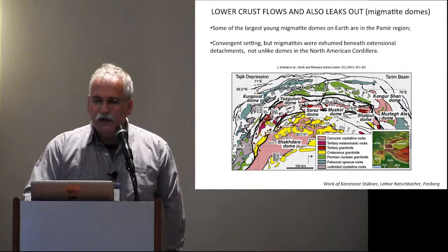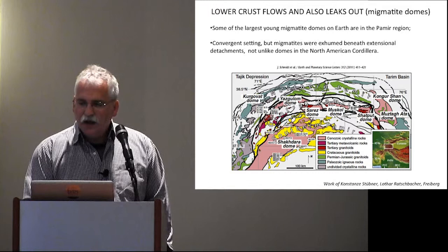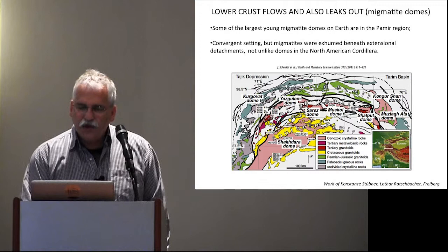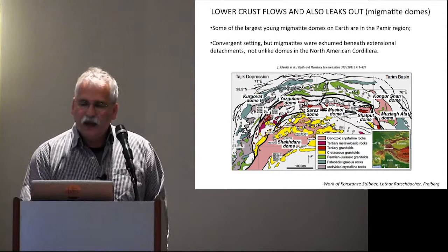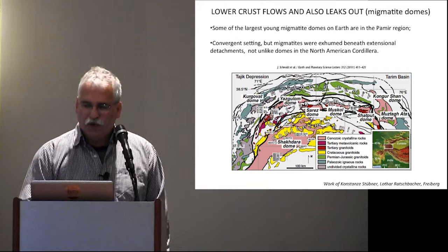There has been a lot of interest in flowing crust, particularly in trying to understand the Tibetan plateau, and it has been a very exciting couple of decades for those working on high-grade rocks to understand how our work participates in geodynamics. This crust that flows at depth often leaks out in migmatite domes. Here I show the western Himalaya in the Pamirs region, where some of the largest domes are filled with partially molten crust that have come up underneath extensional detachments, probably driven by thrusts or some kind of channel flow.